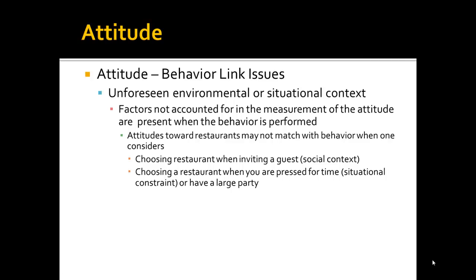Unforeseen environmental or situational events will often break the link between attitude and behavior, because these events aren't present when the attitude is measured but are present when the behavior occurs. For example, you might normally go to Chili's, but if you're inviting a supervisor or a large party, that may change which restaurant you choose. Things crop up in the behavior that aren't accounted for when you measure attitudes.